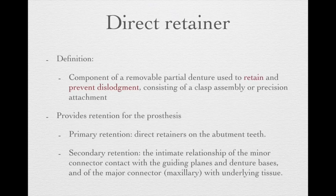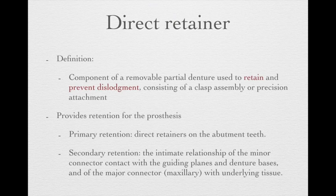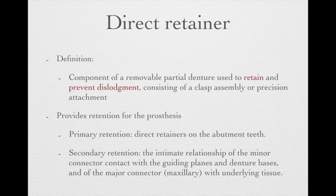That's why we need some component to resist this dislodgement. The components of a removable partial denture used to retain and prevent dislodgement are called the Direct Retainer. The Direct Retainer consists of a clasp assembly or precision attachment. Its purpose is to provide primary retention for the RPD. However, we still have other components that provide secondary retention, which are the minor connectors, the guiding plane, and the denture base to major connectors connections.